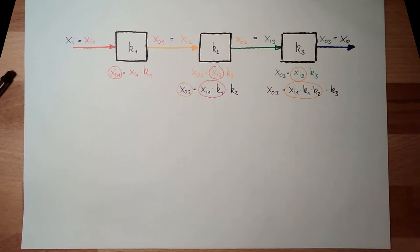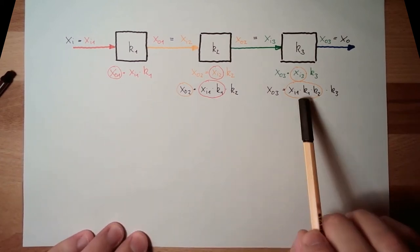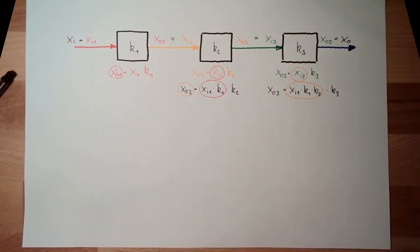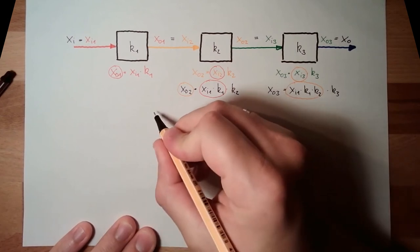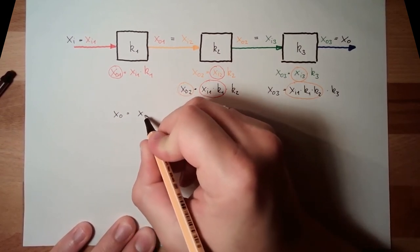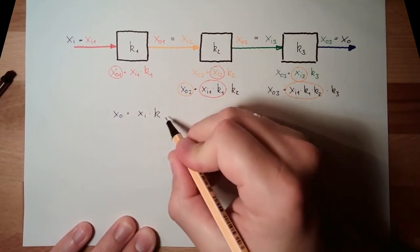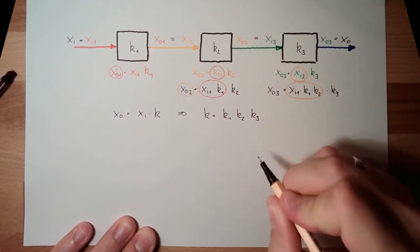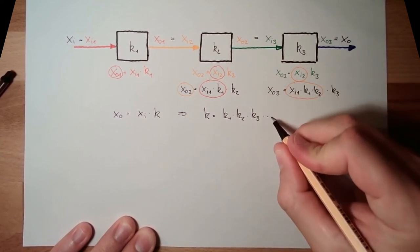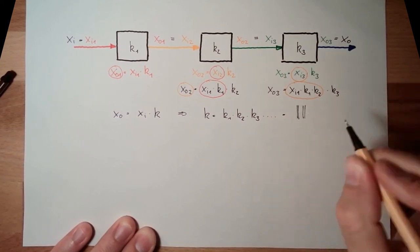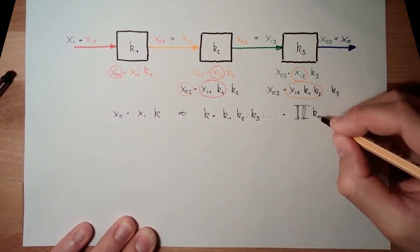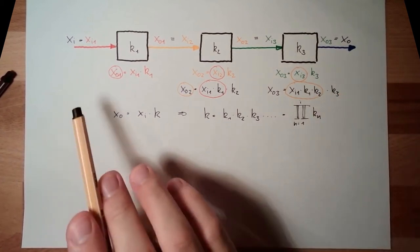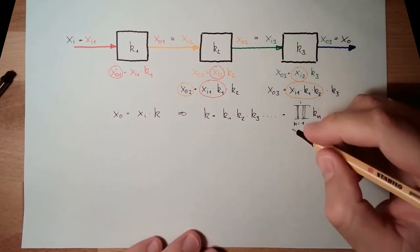I hope some of you already noticed — in the end the total transfer function is the product of all of those. So the total k: if I say xo equals xi dot k, then this k is nothing more than k1 multiplied by k2 multiplied by k3. And if I have more items in the chain, it's simply more. That's the multiplication of all parts which are in the chain.